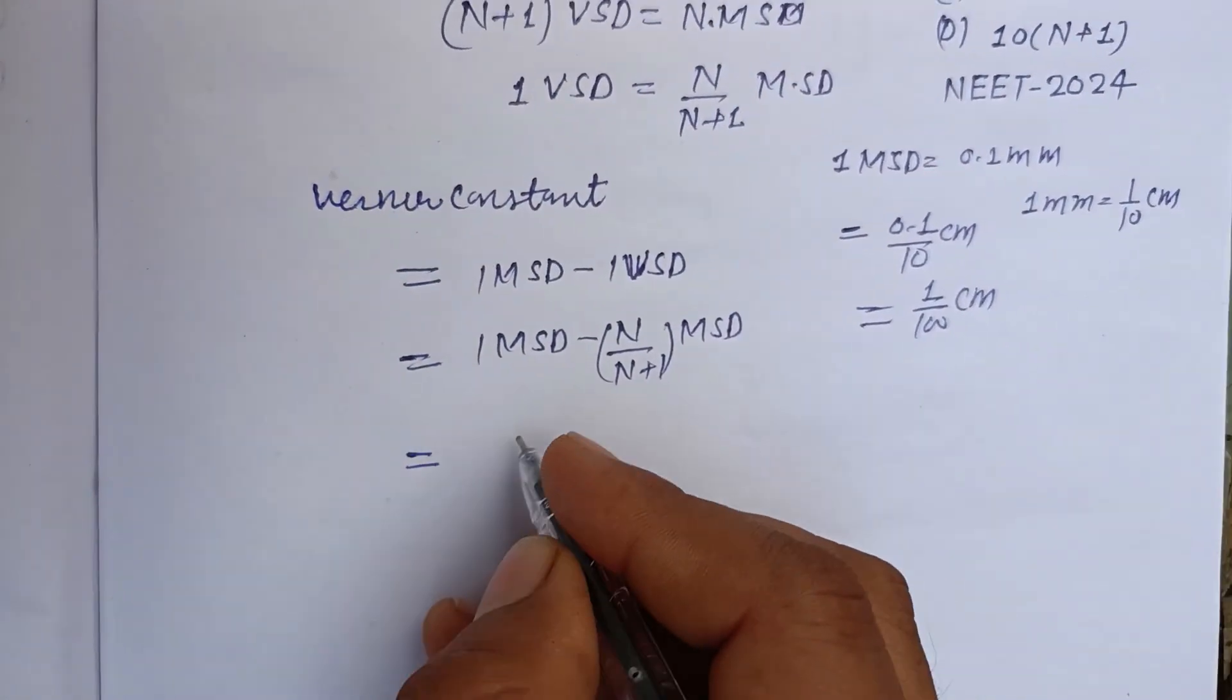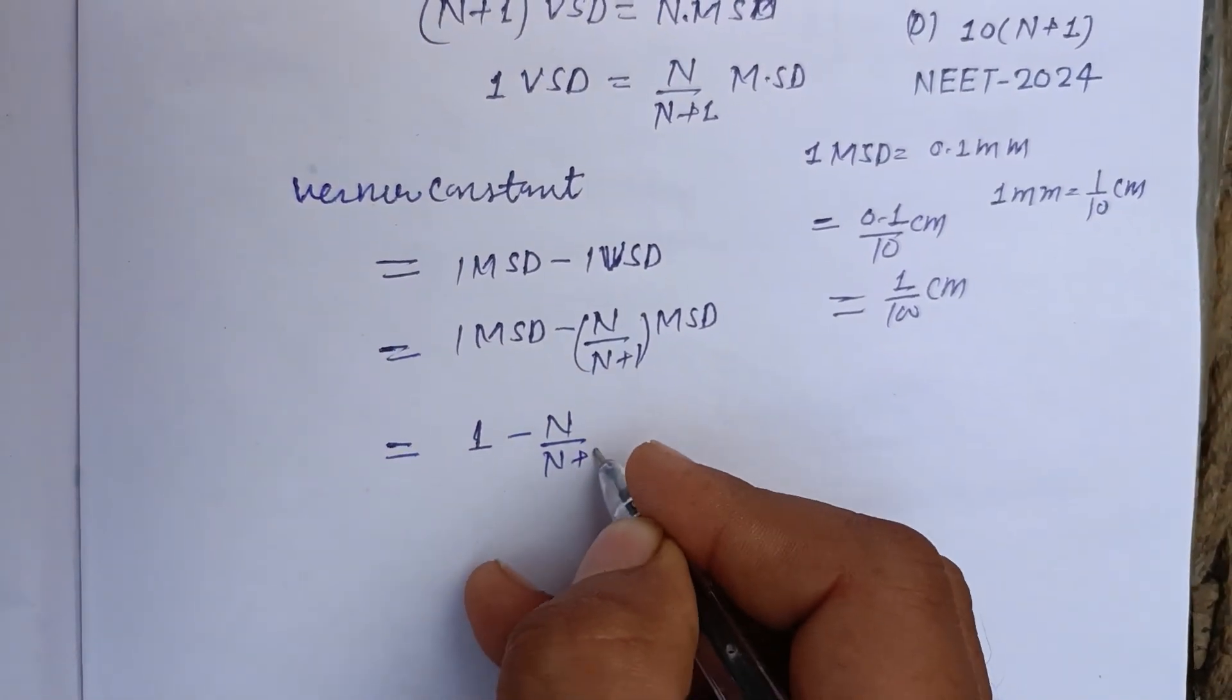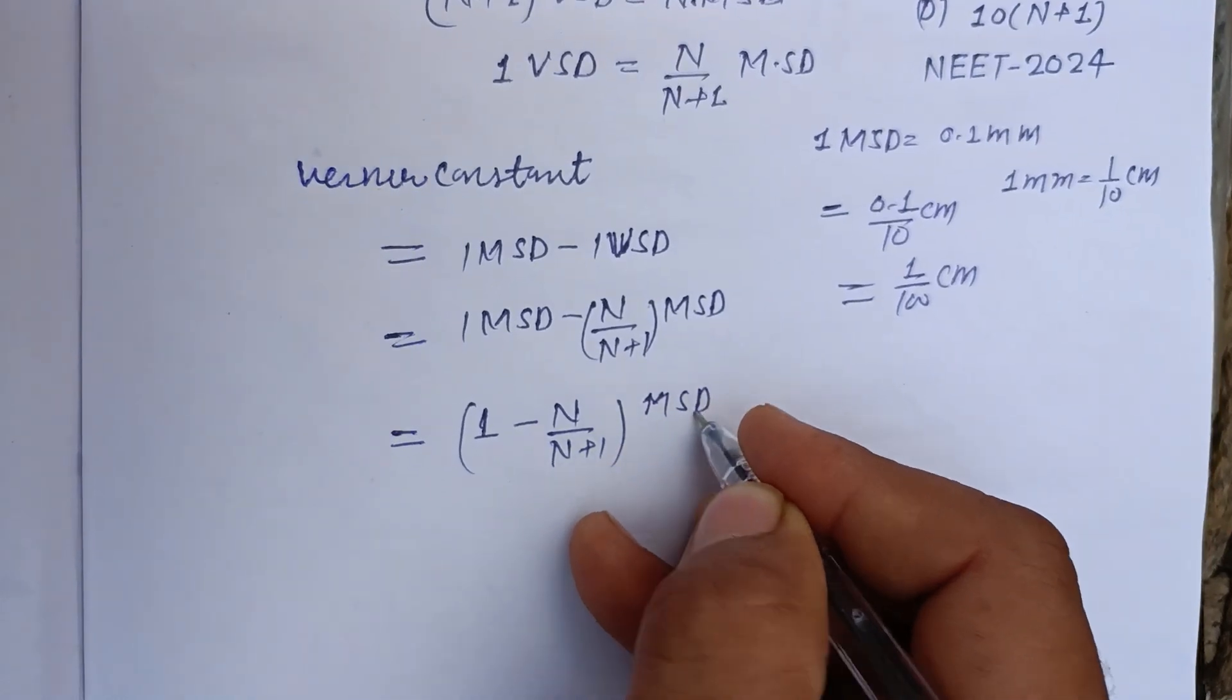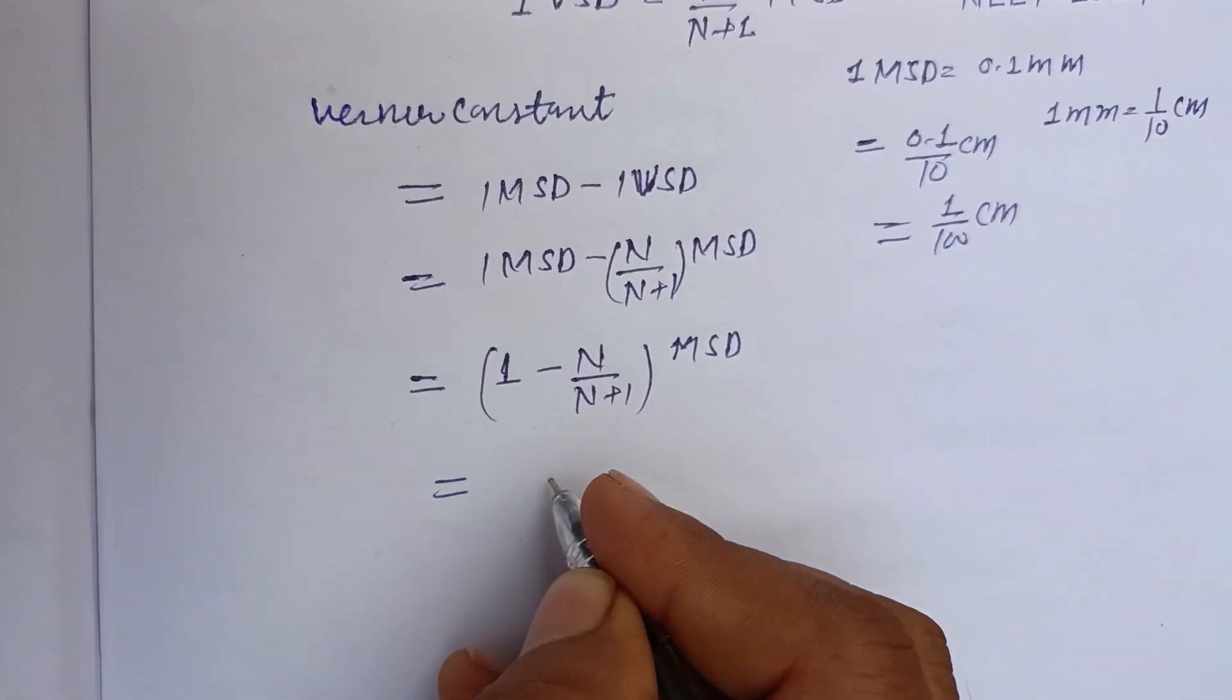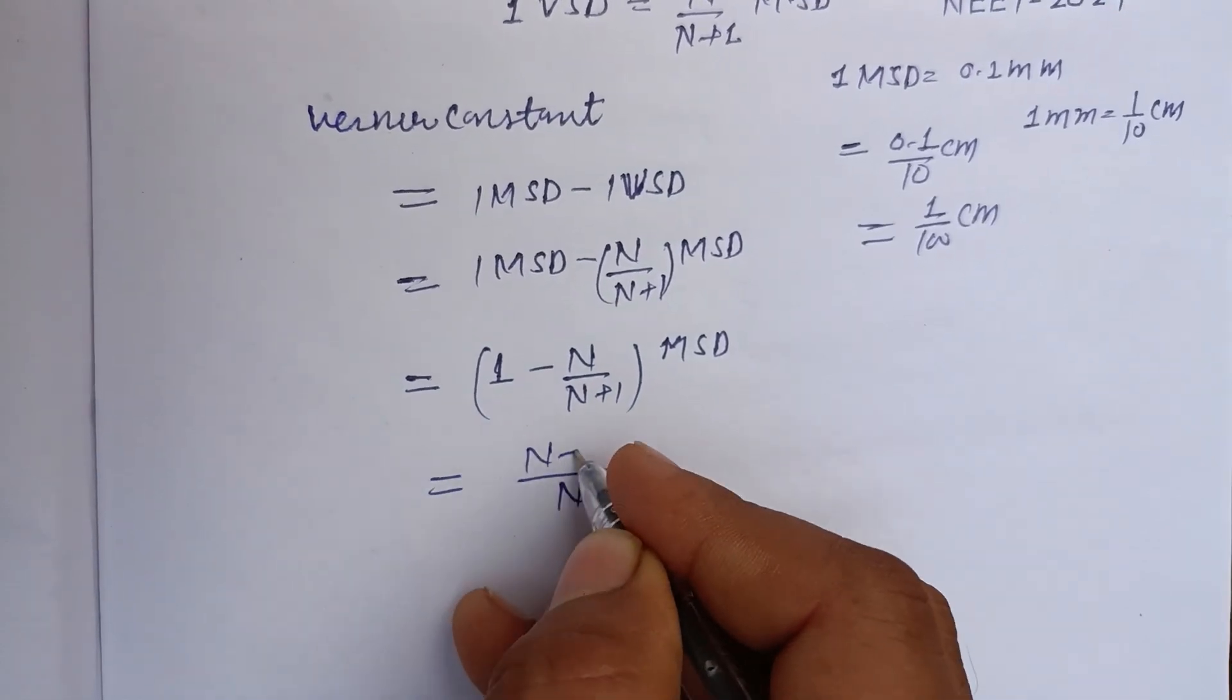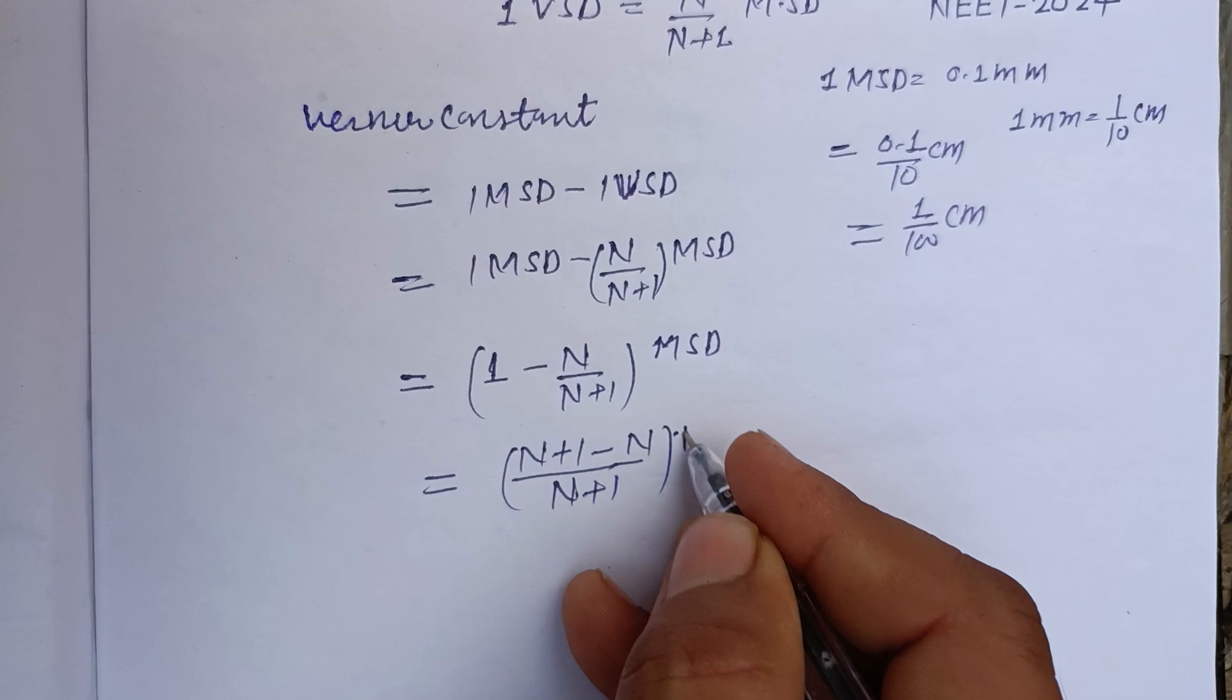So 1 MSD minus 1 VSD is equal to N over N plus 1 into MSD. MSD is common in this, so 1 minus N over N plus 1 into MSD. And this is N plus 1 over N plus 1 minus N over N plus 1 into MSD.